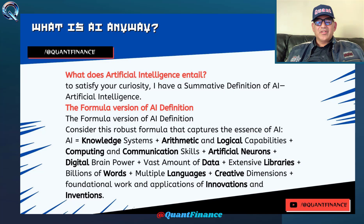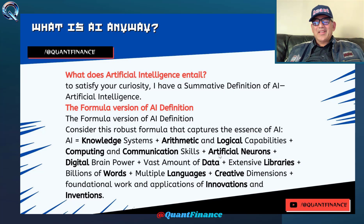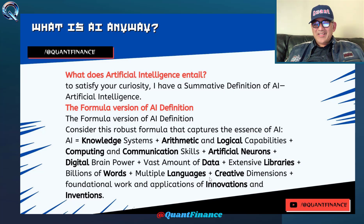I have created a formula version of the AI definition, which is that AI equals knowledge systems plus arithmetic and logical capabilities, computing and communication skills, plus artificial neurons, plus digital brain power, plus vast amounts of data, plus extensive libraries of books and information, plus billions of words that we use, plus multiple languages that we speak, plus creative dimensions, plus foundational work and applications of innovations and inventions.